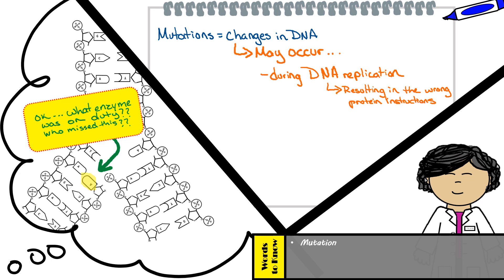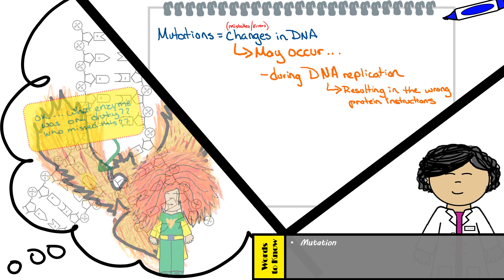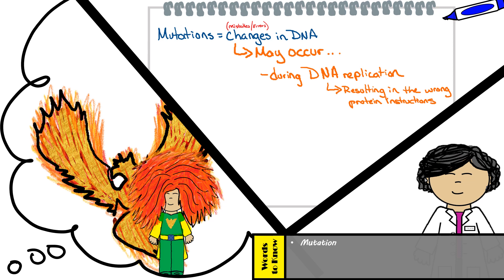We do have an enzyme whose role is to proofread and check for errors during these important cellular processes. However, sometimes mistakes just happen and are simply missed, which results in the DNA being altered. Other times, mutations may occur due to environmental factors such as ultraviolet radiation from the sun, or due to mutagens, which are chemicals that may cause DNA to be altered.